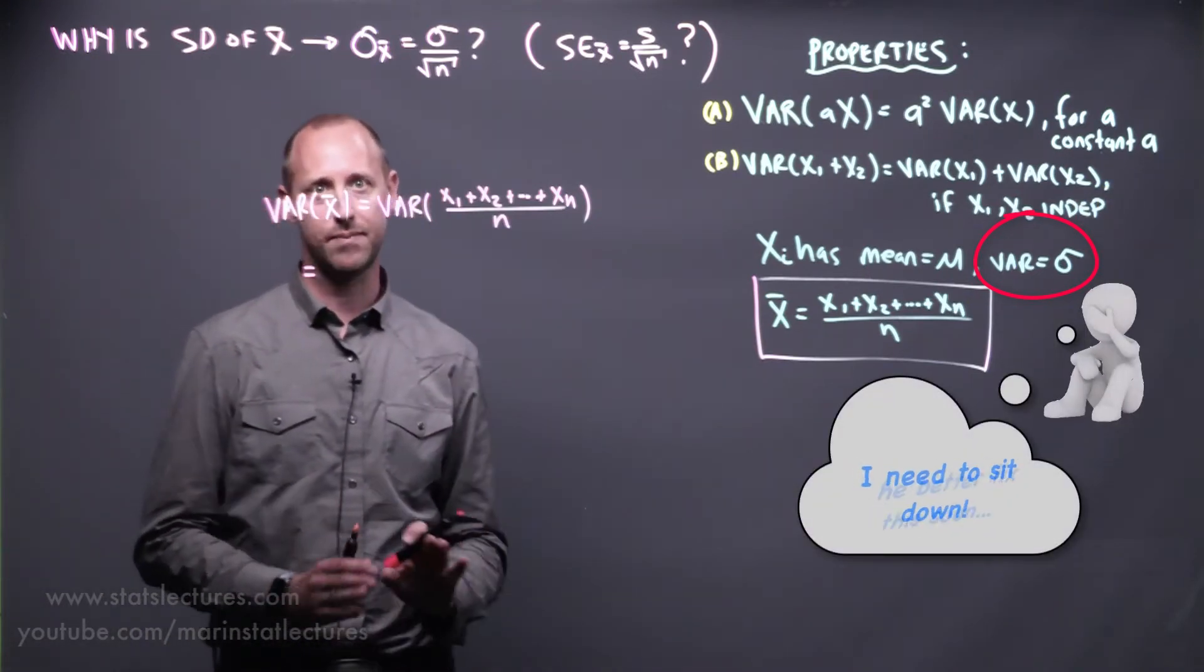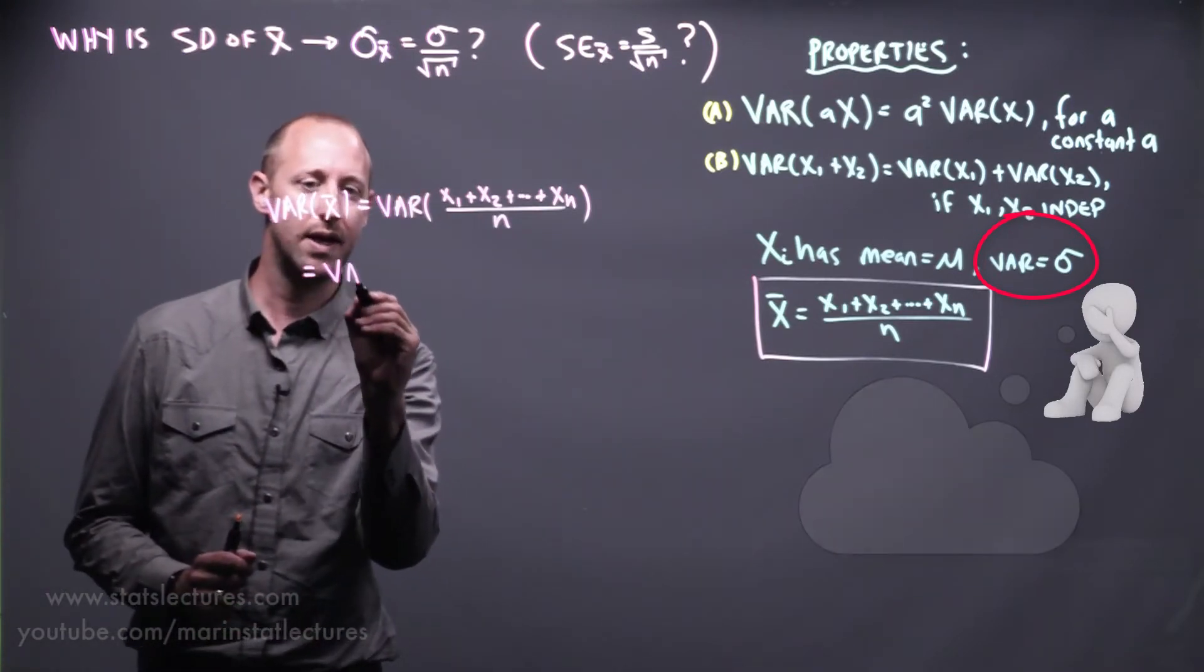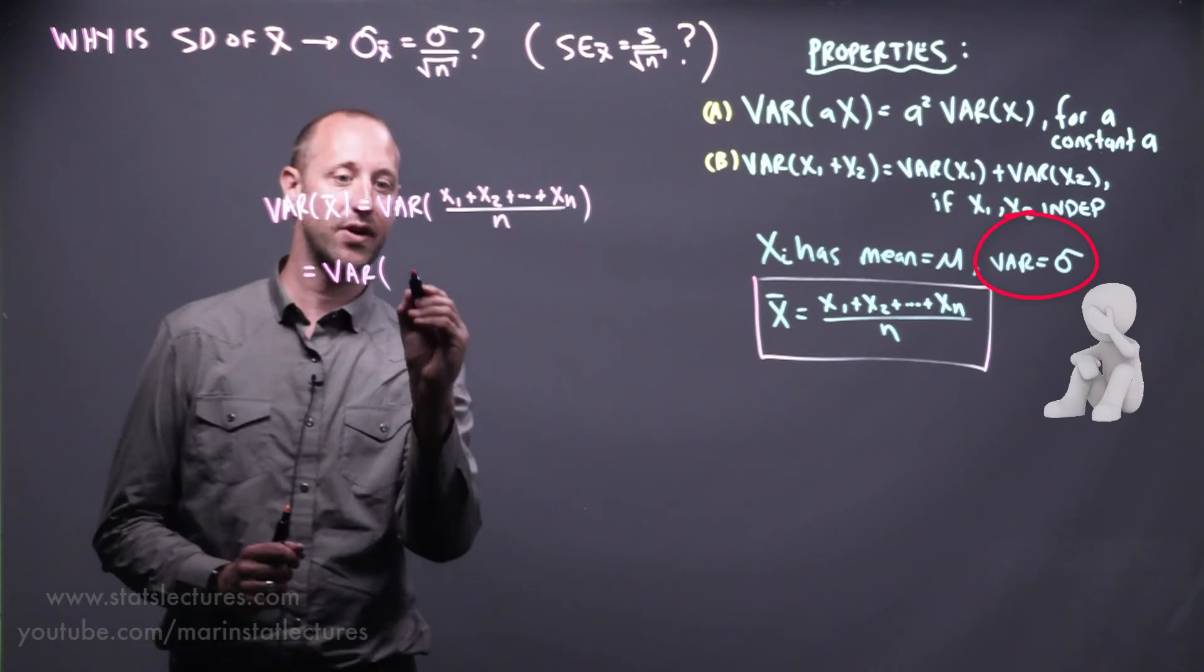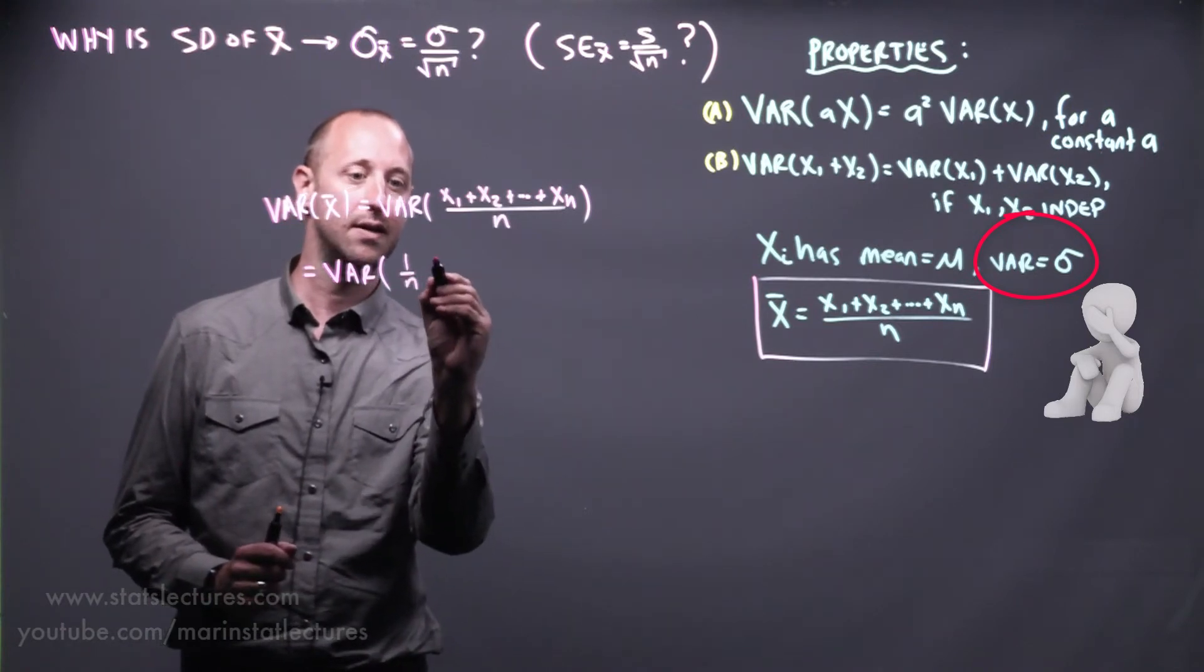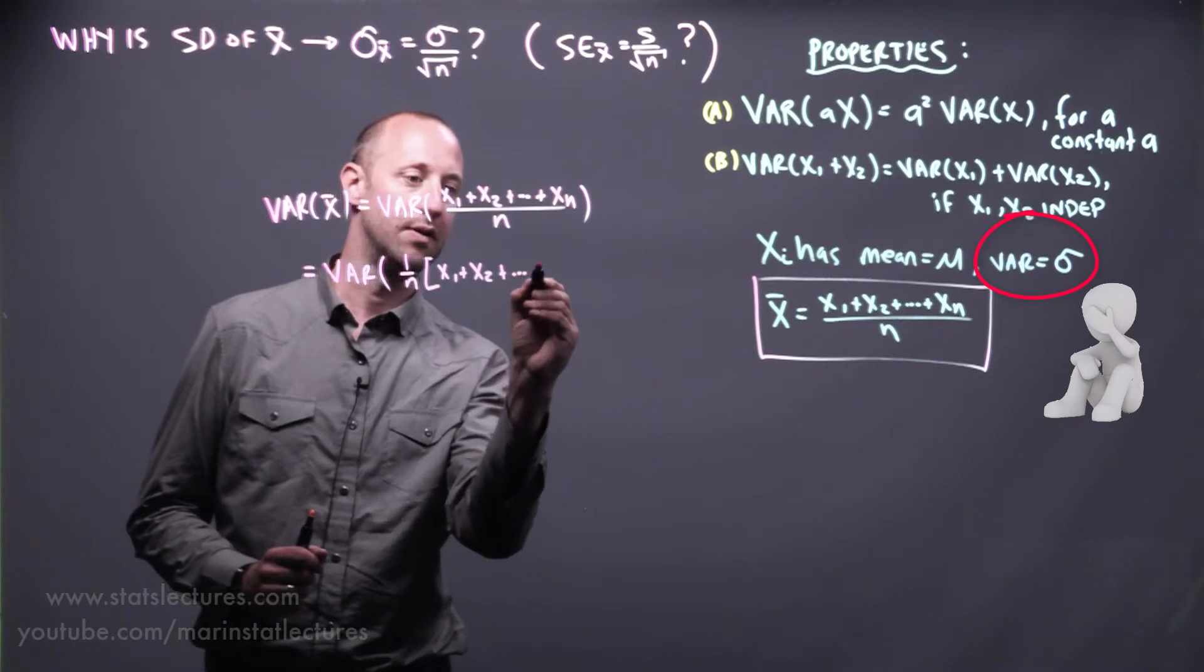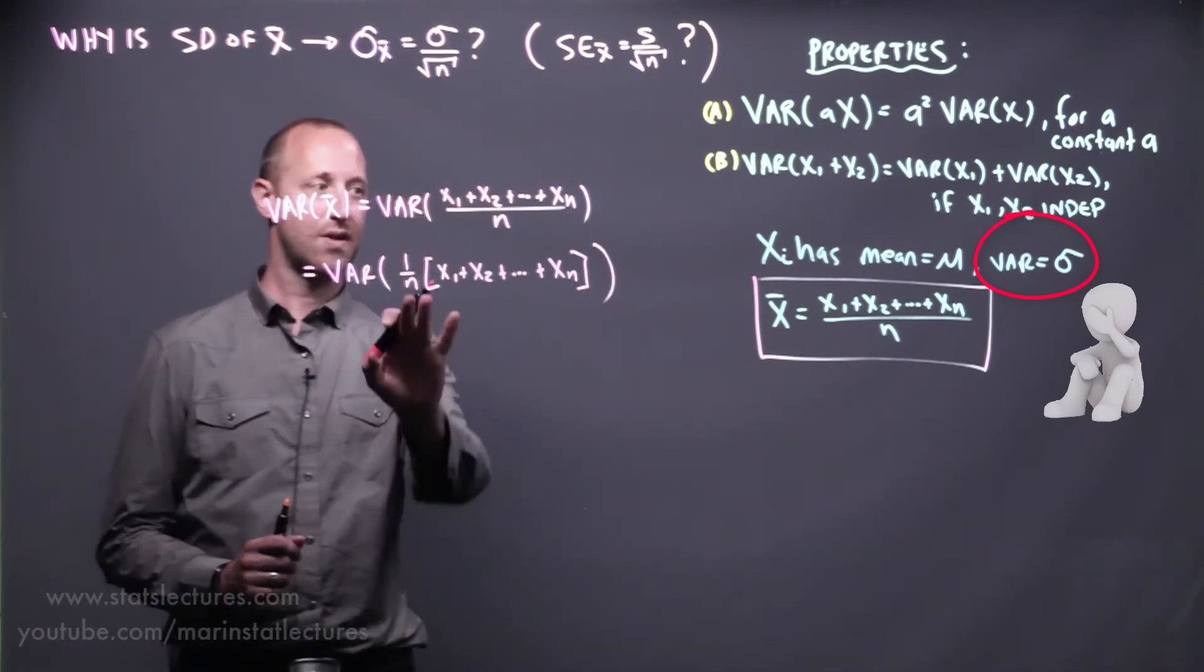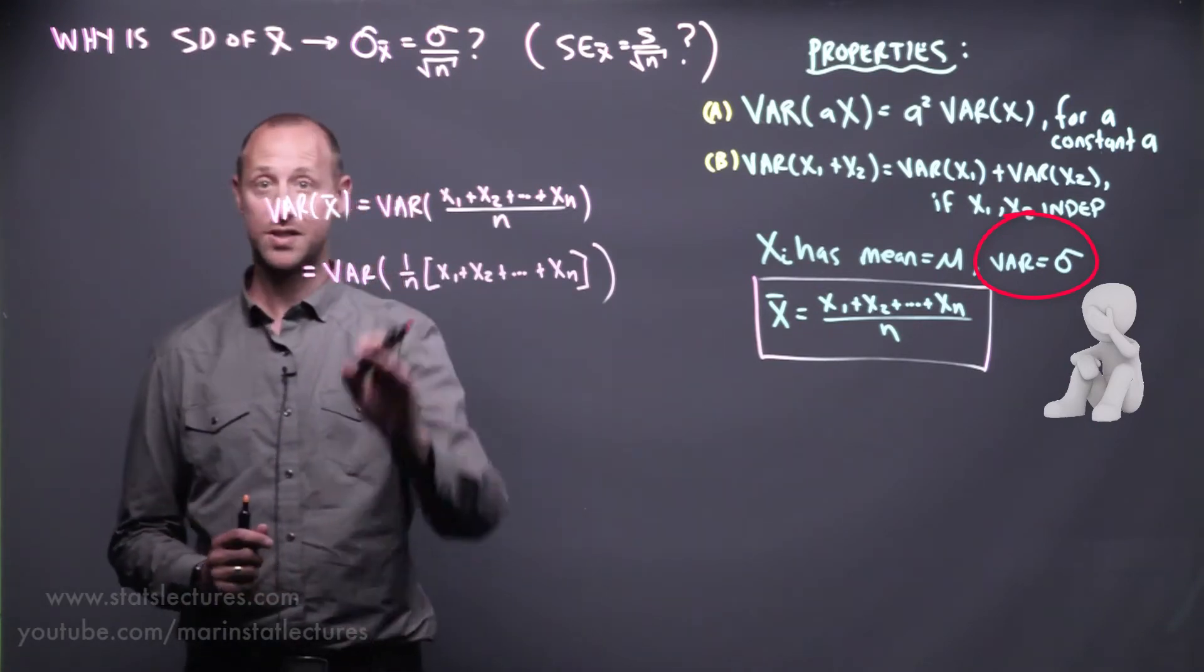I'm going to work through this step by step, and you can probably skip a few of these steps if you like. We can now express this as the variance of 1 over n times x1 plus x2 up to xn. So I've just taken 1 over n as the constant and put it there.